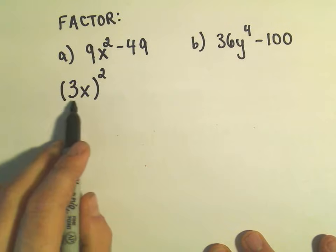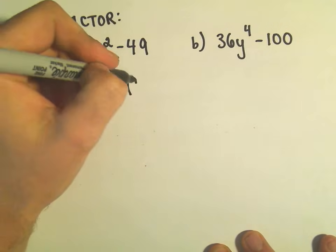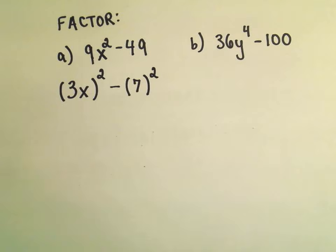So if you multiply 3x by 3x, we get 9x squared. And then 49, we can write that as 7 squared. I typically skip this step, honestly, but just to illustrate.